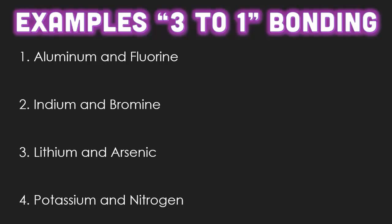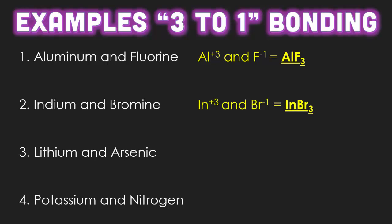Here are some examples of three-to-one bonding. In the first example, aluminum has a positive three charge and fluorine has a negative one. Therefore, you would need three fluorines to give a negative three charge to balance out the positive three from aluminum. Indium (symbol In) matched with bromine (Br) — when you find them on the periodic table, they're very similar to the previous example, giving the final formula InBr₃. They're similar because of the number of valence electrons and because both elements fall on the same families or groups of the periodic table.